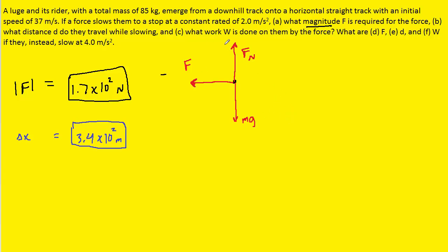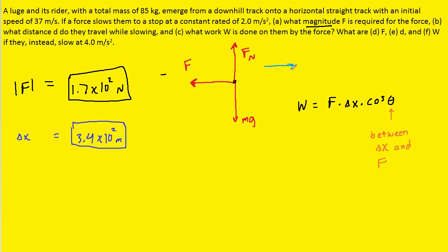For part C, which asks for the work done by the net force F, we know that work equals the magnitude of F multiplied by the distance the object travels, multiplied by the cosine of the angle between the displacement vector and the force. Capital F was pointing to the left, and the object was moving to the right — so the displacement vector points right. The angle between that displacement vector and force F, which points left, is 180 degrees. So when we plug into the work equation, our angle must be 180 degrees.